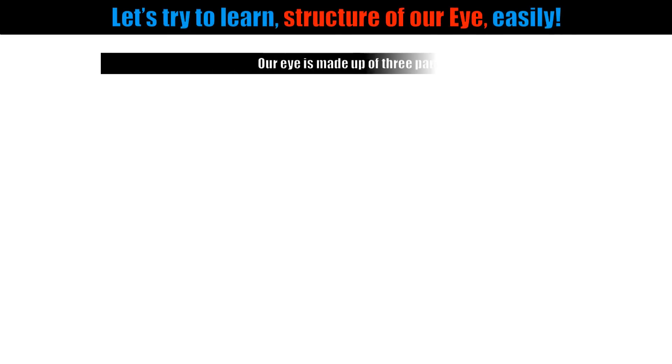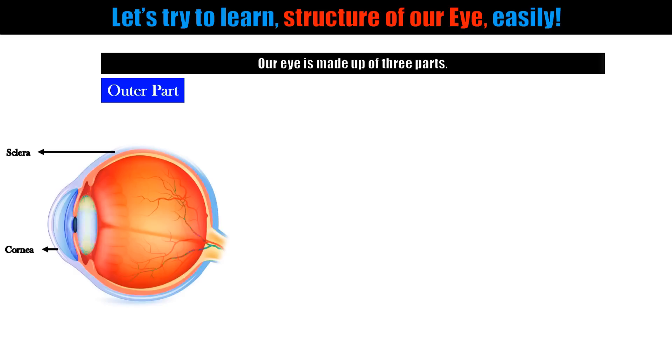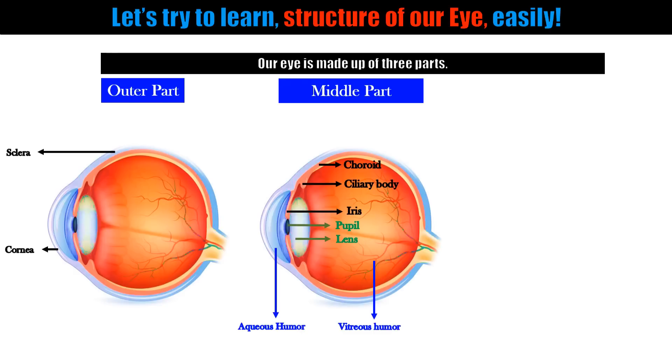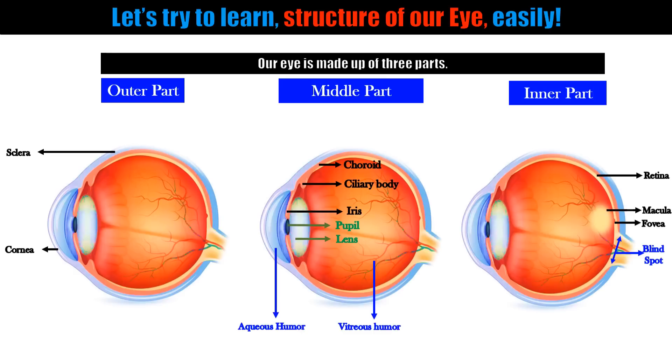Hello students. Let's try to learn the structure of our eye easily. Our eye is made up of three parts: outer, middle, and inner part.